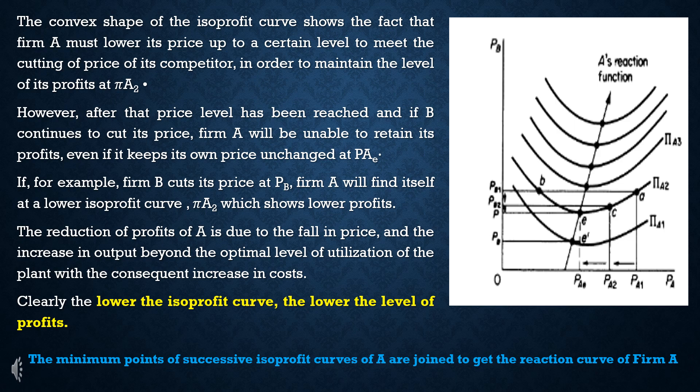In the diagram, the price level set by firm A is on the x-axis and the price level set by firm B is on the y-axis. These are the isoprofit curves of firm A, showing the price combinations of firm A and B that give the same level of profit to firm A.